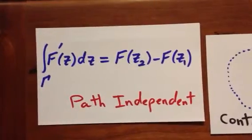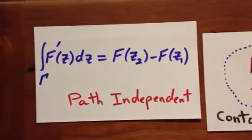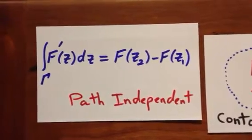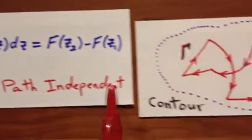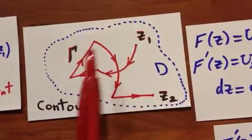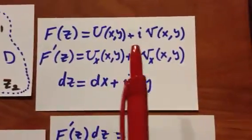Let's continue the proof of path independent case. The important assumption is that F is analytic inside D. D is a domain, and F equals U plus iV.